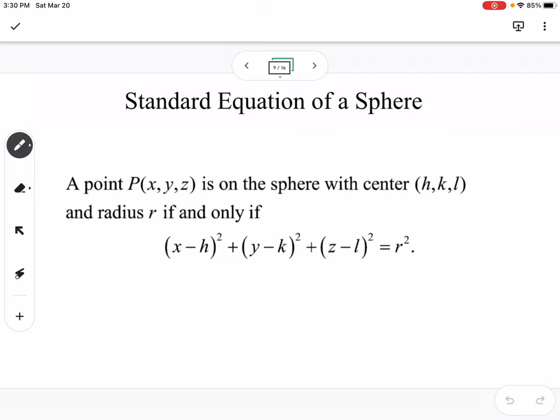Standard equation of a sphere. Just like a circle, a circle was (x-h)² + (y-k)² = r². The standard equation of a sphere, given a center (h, k, l) would be (x-h)² + (y-k)² + (z-l)² = r², where r is your radius.